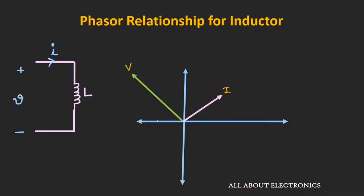For the purely inductive circuit, the voltage will lead the current by 90 degrees, and we can represent this voltage V as jωL into I. Whenever any term is getting multiplied by the j operator, the phasor will get rotated 90 degrees in the anti-clockwise direction.